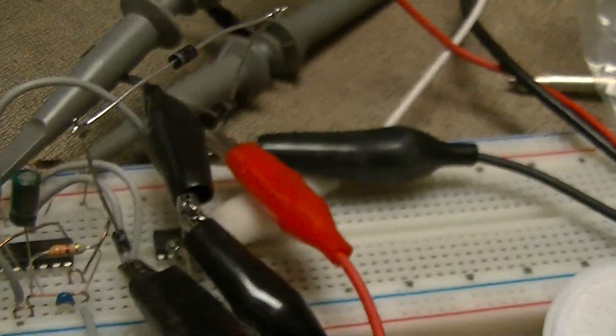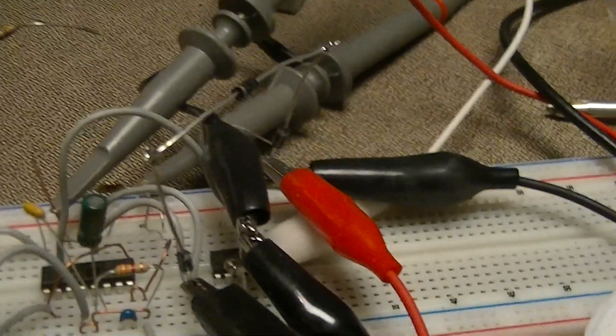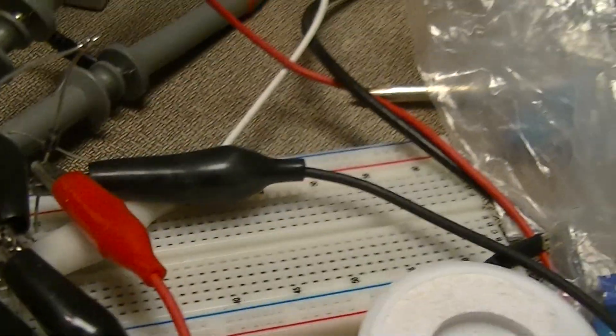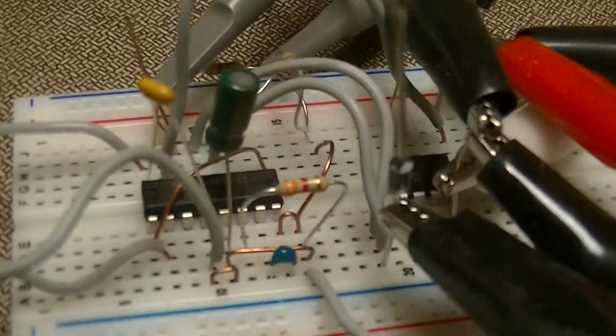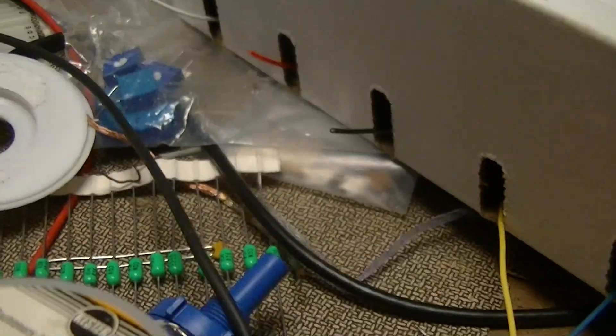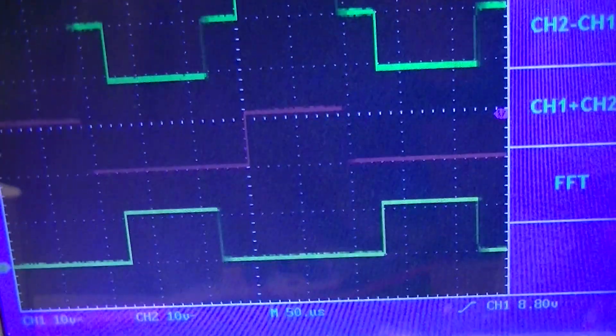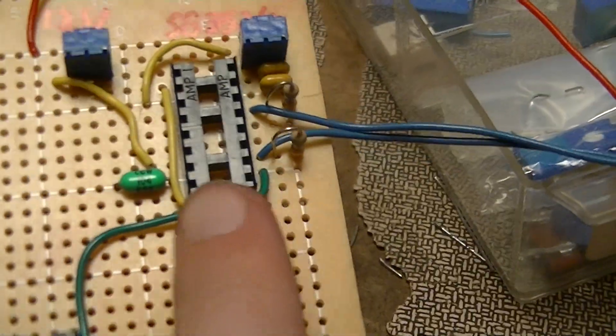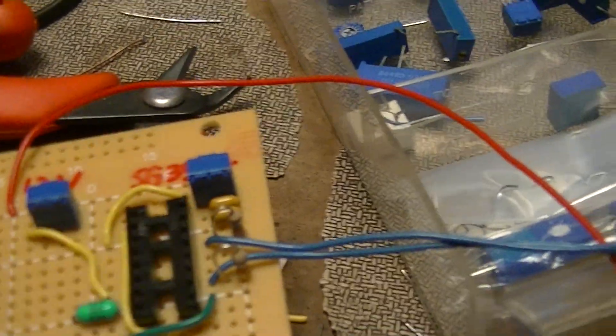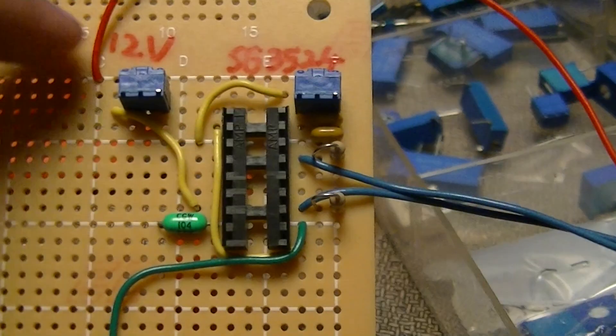For this particular chip I have it configured in constant duty cycle mode, and I just have a trim pot to adjust the duty cycle. That is for the one that is going to be driving the output inverter, or the output H-bridge, which is this SG3524 on the board.